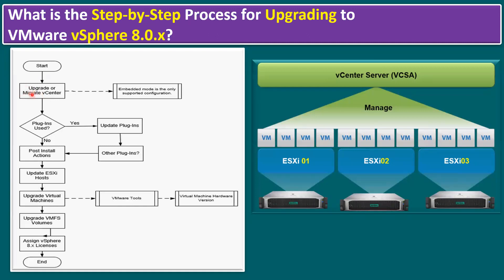The appliance — vCSA, vCenter Server Appliance — in embedded mode is the only supported configuration going forward. Apart from the vCSA upgrade, some environments use plugins such as HPE OneView or storage-level plugins within vCenter. VMware recommends updating those plugins after the vCenter upgrade. If plugins are being used, update them before proceeding to post-install actions. If no plugins are used, you can proceed directly to post-install actions. This covers the first and second steps.